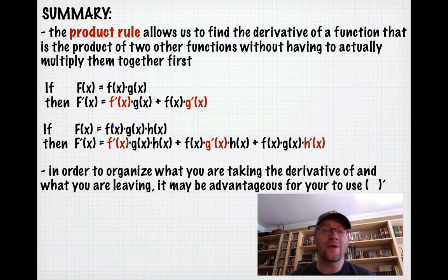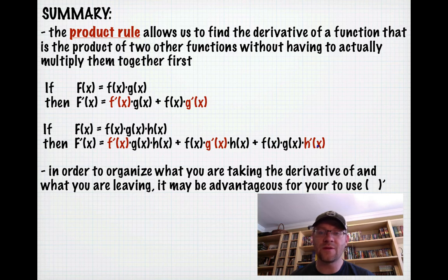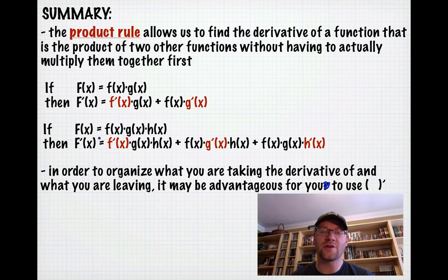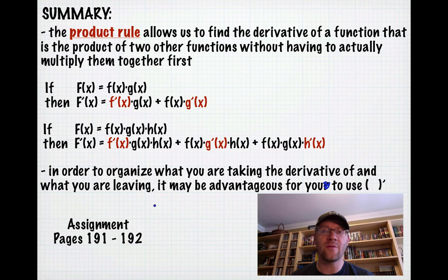If we have three functions — f(x)·g(x)·h(x) — we take the derivative of each one in turn and multiply by the other two, then add all three results together. To stay organized, use brackets with the prime notation so you know which function you're differentiating and which you're leaving. Your assignment is on pages 191 to 192. Good luck, and we'll see you in class.